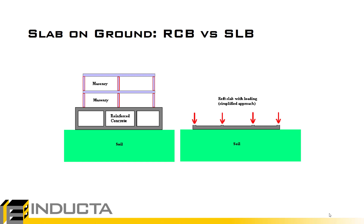For soil structure interaction, we have to consider the differences between the RCB 3D software and the SLB software, which only models the slab plate. In RCB on the left, we model the full structure — the bottom floor cast into concrete walls, tied in with the slab — so RCB models the stiffness matrix of the entire structure above. The SLB model on the right is a simpler raft slab with only the stiffness matrix of the slab itself, making it somewhat softer and more simplified.